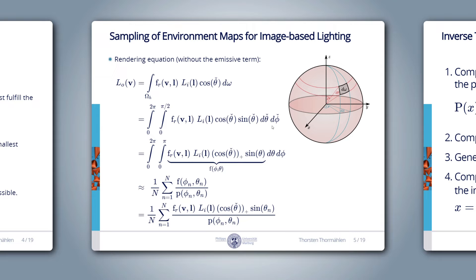In today's implementation, however, we will align the spherical coordinate system with the coordinate system of the environment map — the global world coordinate system. We integrate over the entire spherical environment map, so theta goes from 0 to pi. I have marked this theta in the cosine term with a hat to remind us it is the angle between the normal and the incoming light direction. If this cosine term is negative, the light is hitting the surface from behind and should be ignored — indicated by the ramp function, which is 0 for negative arguments.